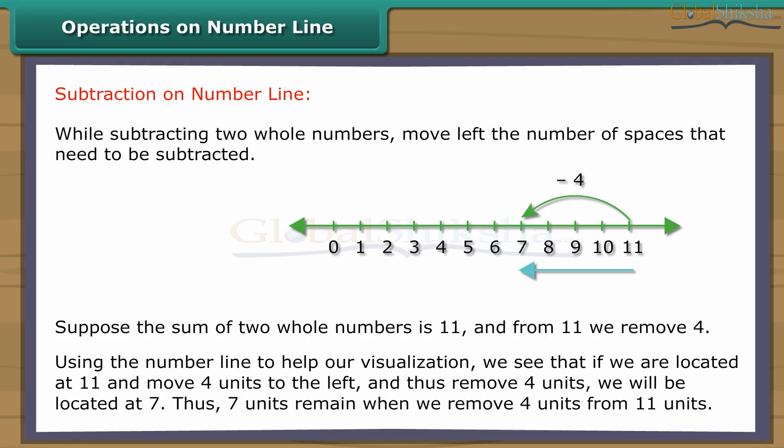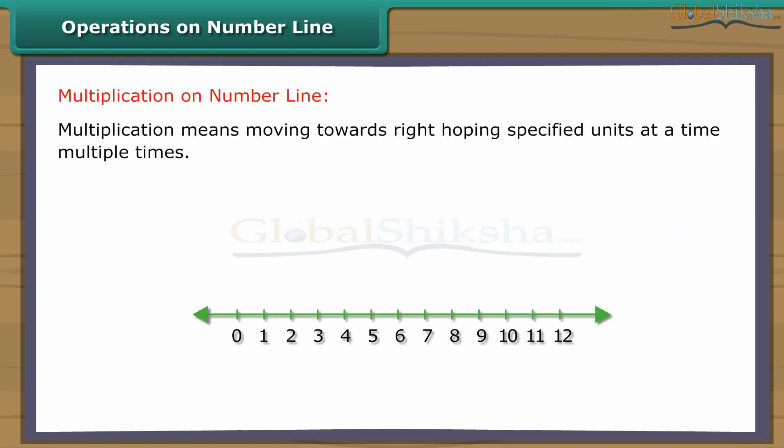Multiplication means moving towards right, hopping specified units at a time, multiple times. For example, two into five: Start from zero, move two units at a time to the right, make such five moves. You will reach ten. So we say two into five is equal to ten.